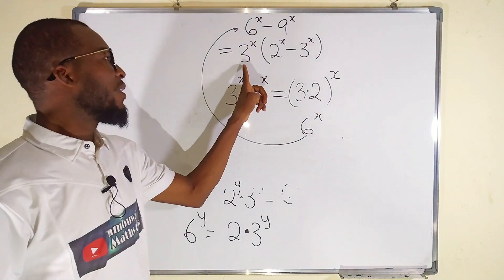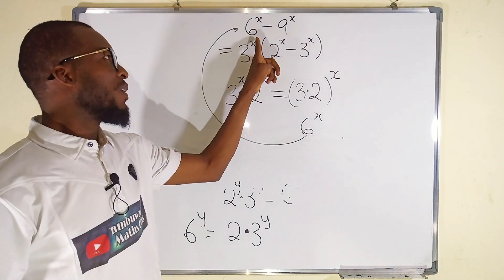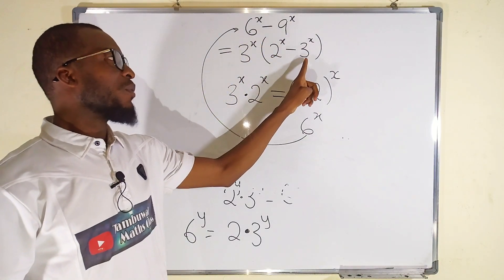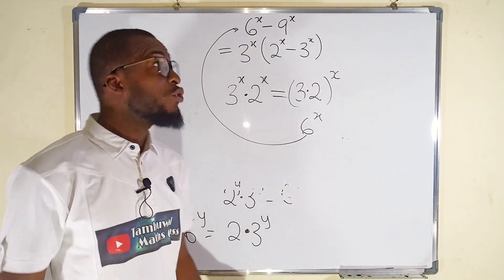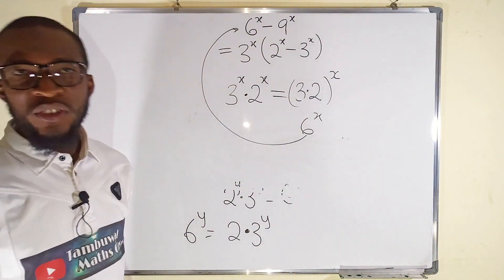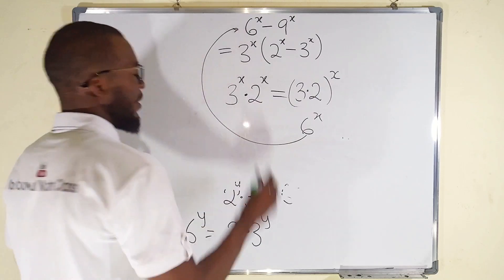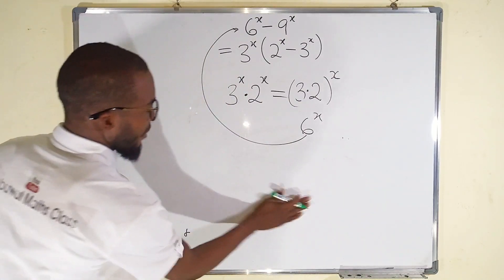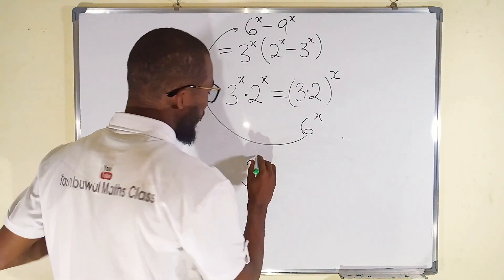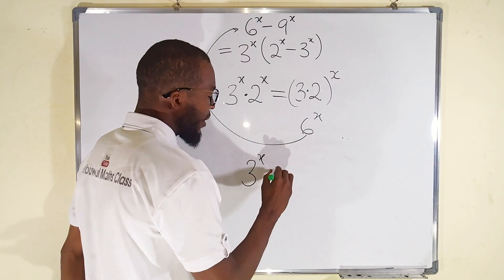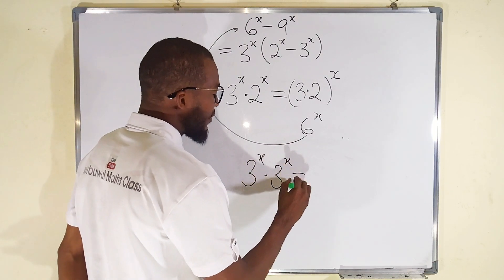And if you do the same thing, 3^x multiplied by 3^x, you shall obtain 9^x. Remember, let me do that one as well.